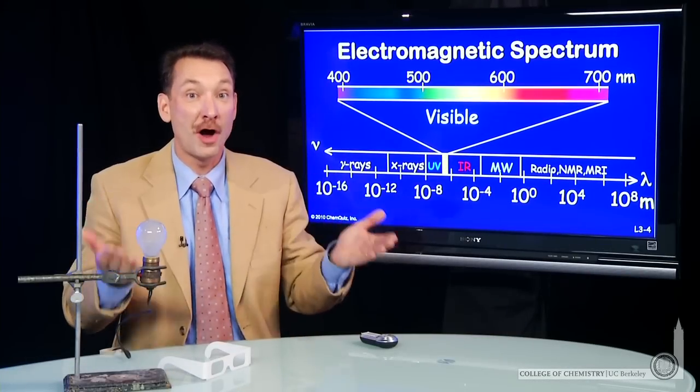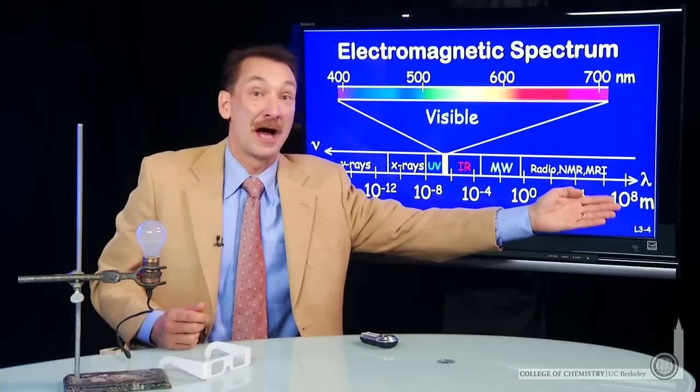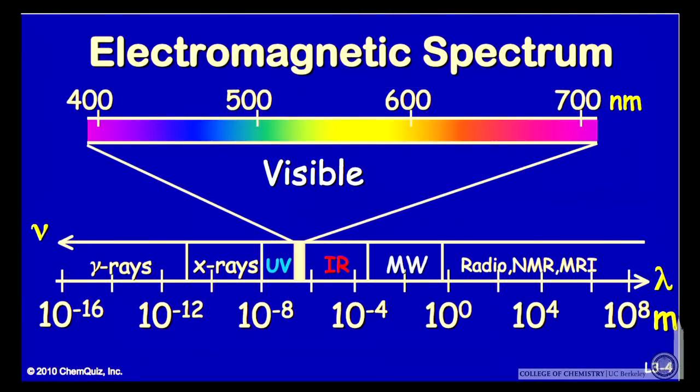Electromagnetic radiation encompasses a broad range of wavelengths and frequencies, from astronomical proportions, 10 to the eighth meters, like Earth to sun distances, down to tiny microscopic wavelengths, 10 to the minus 16th meters.